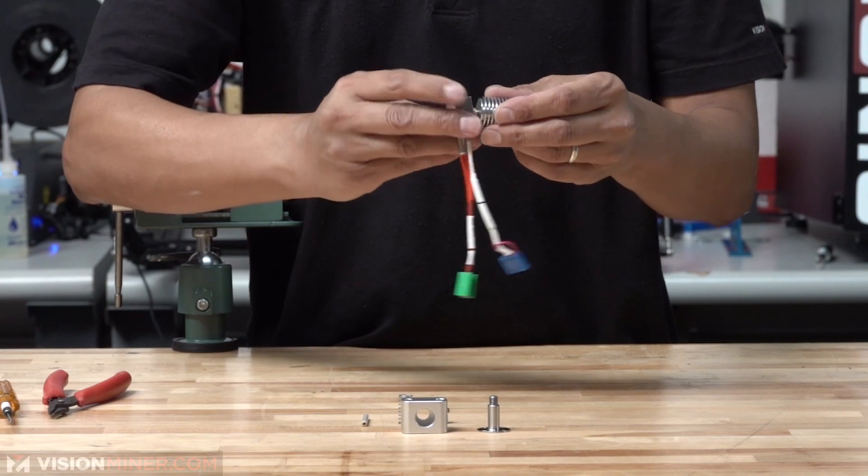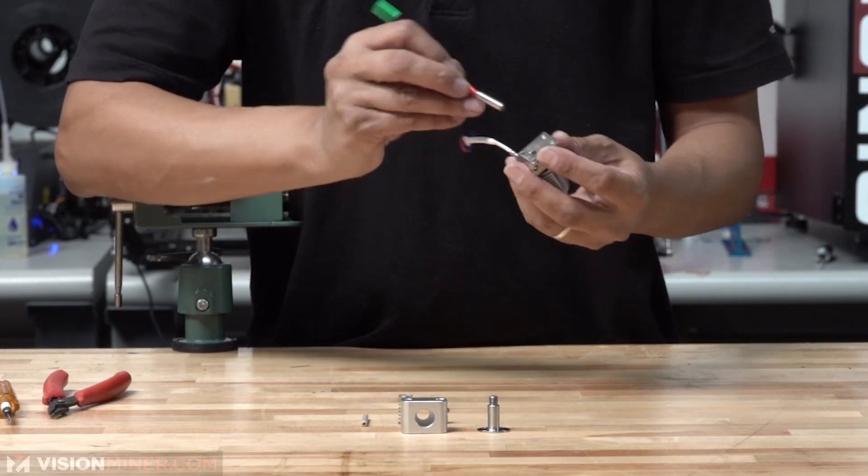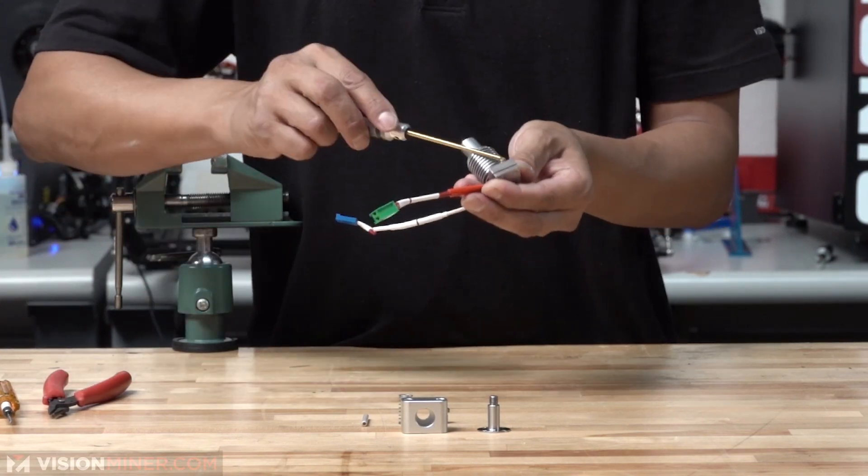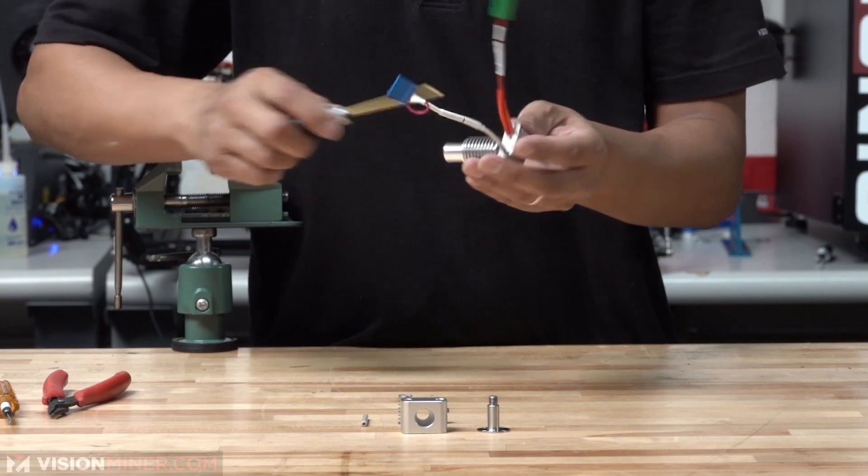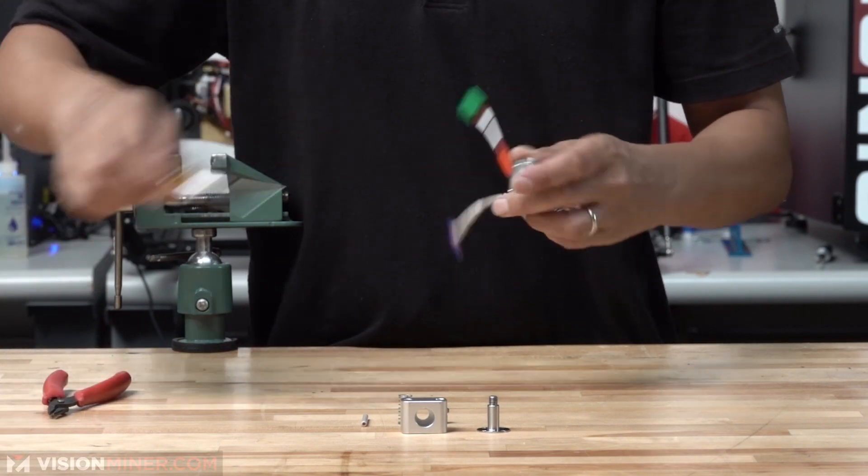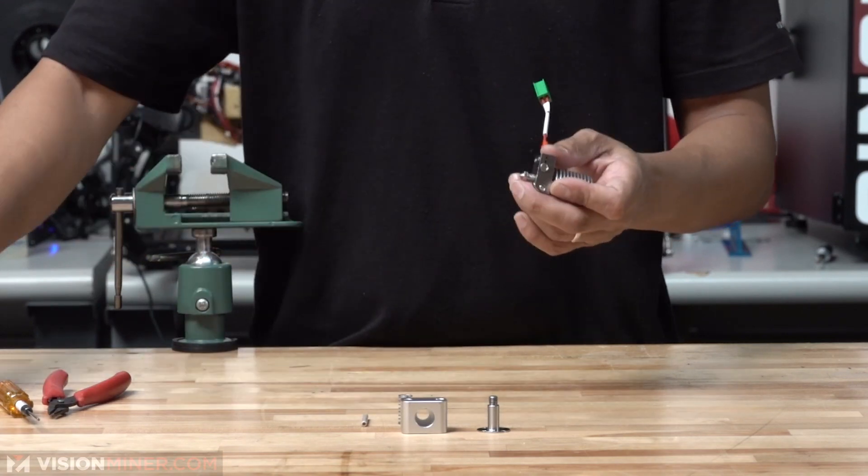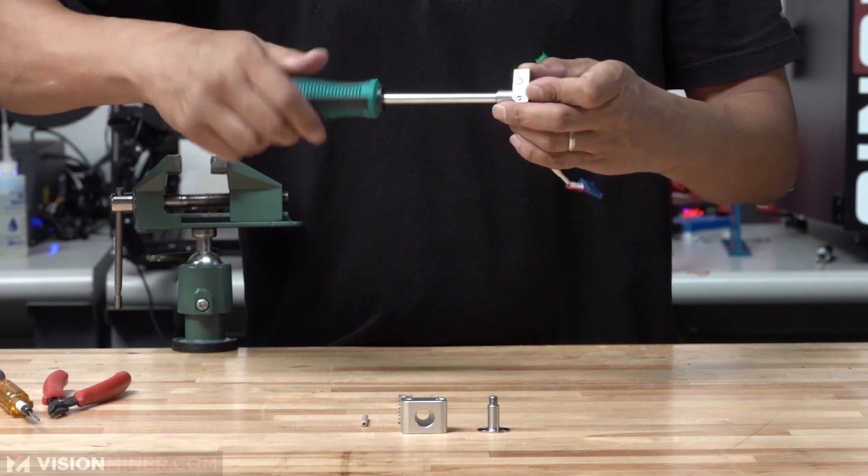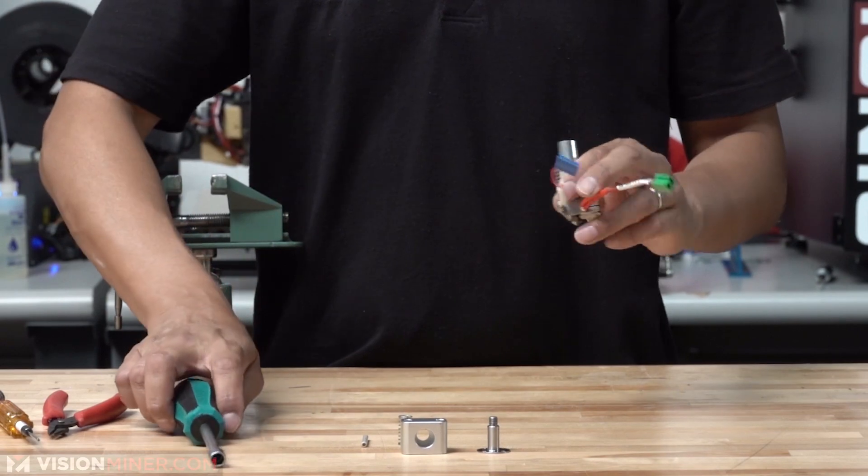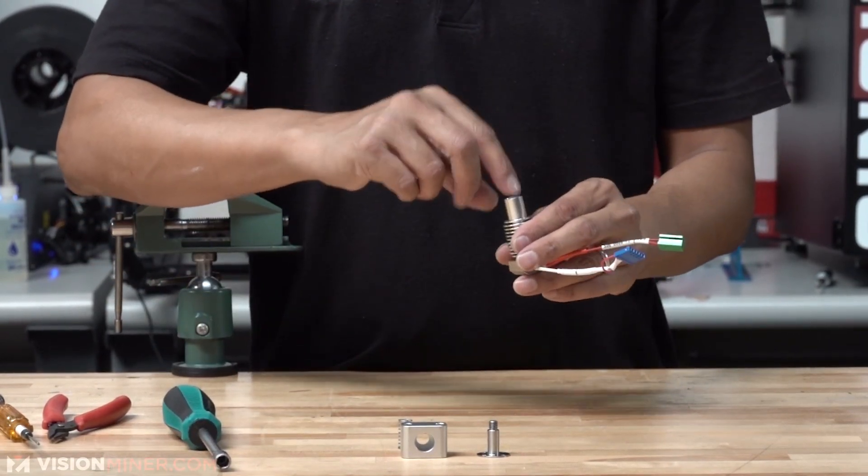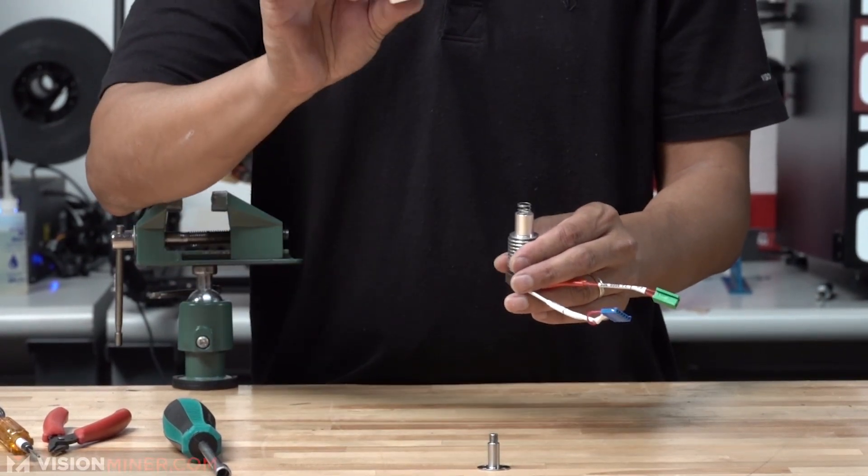Heat block. Let me tighten these screws real quick here. Okay, the nozzle will go on. Okay, peek tube, spring, top lock.